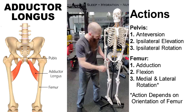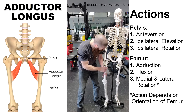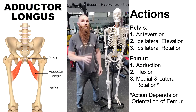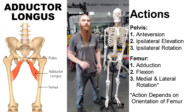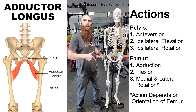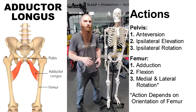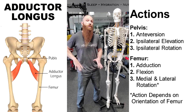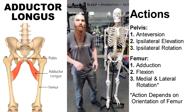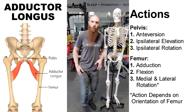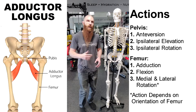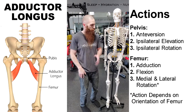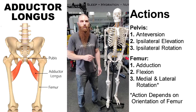The adductor longus attaches from the anterior body of the pubis to the middle third of the linea aspera at the medial lip. And because it crosses both the pelvis and the femur, we know it's going to have actions in both of those areas. At the pelvis, its main action is going to be anteversion of the pelvis or an anterior pelvic tilt. It's also going to be responsible for ipsilateral elevation — elevation to the same side — and also ipsilateral rotation, so rotation to the same side. At the femur, its main action is going to be adduction, so bringing the thigh toward the midline, and it's also going to be responsible for flexion. And then one of its lesser actions at the femur is going to be medial rotation, so rotating the thigh in toward the midline.